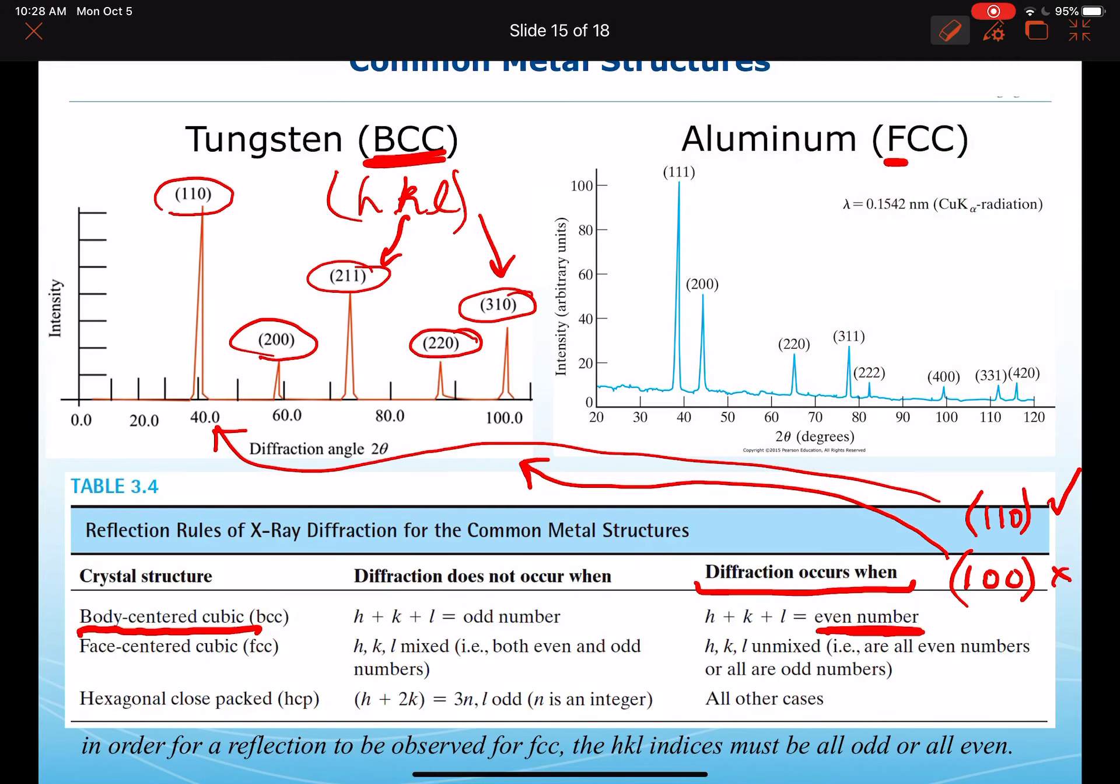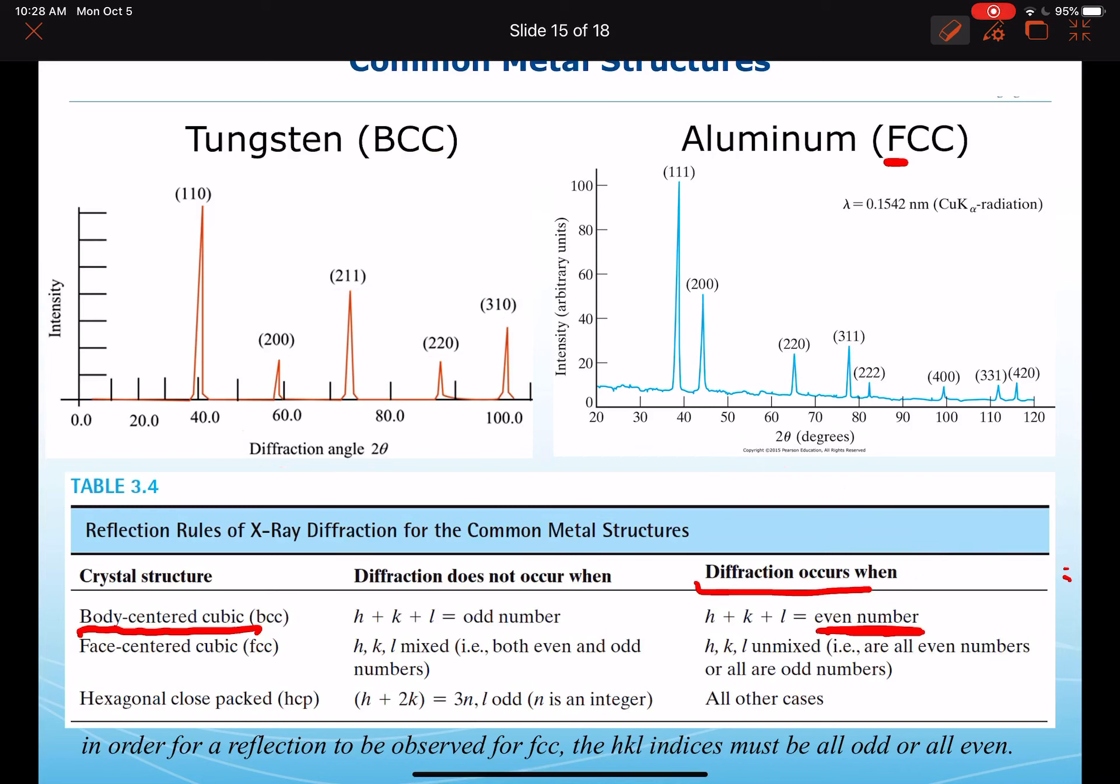In face-centered cubic, the rules are similar. However, mixed and unmixed is what's used in your textbook. How we interpret that is that in order for a reflection to be observed for an FCC system, the hkl indices must all be odd or all be even. We can look at the aluminum indices. They have to all be odd or all be even: 111 all odd we're okay, 200 all even we're okay, 220 we're okay, 311 all odd we're okay. Those are the rules for a face-centered cubic system.